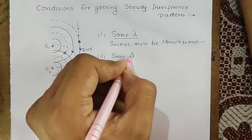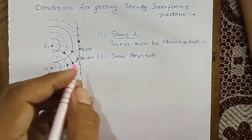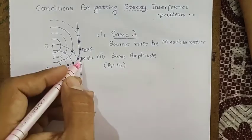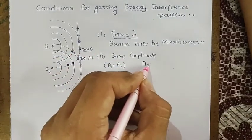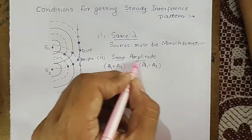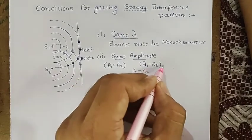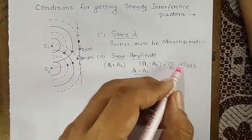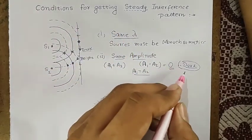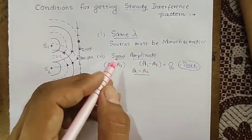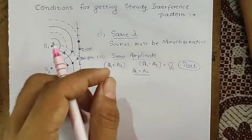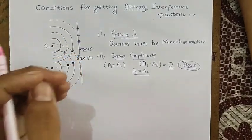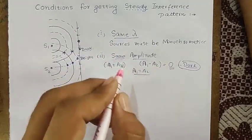The second condition is that we need waves of the same amplitude. Where bright is forming, amplitude is A1 plus A2. Where dark is forming, amplitude is A1 minus A2. If A1 equals A2, then A1 minus A2 becomes completely zero, meaning the dark point will be truly dark. For good contrast between bright and dark, same amplitude is required, though it is not a strictly compulsory condition.